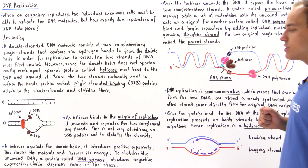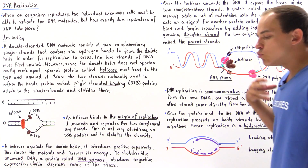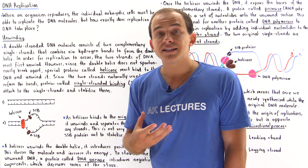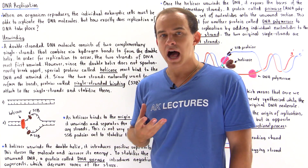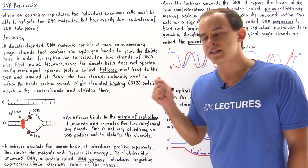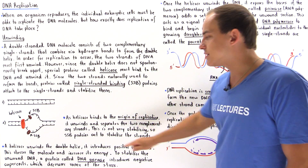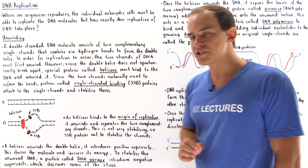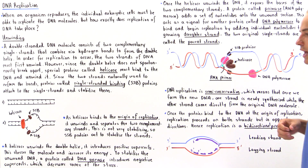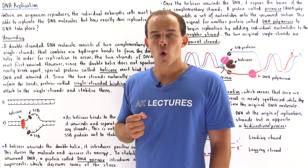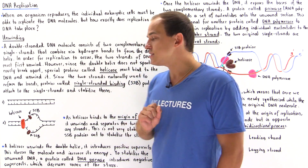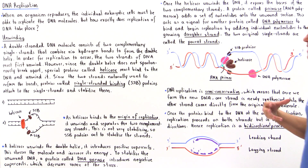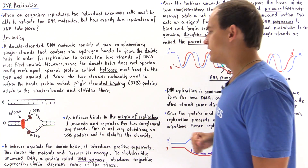As helicase unwinds our double helix, that unwinding process actually introduces positive supercoils. Positive supercoils basically destabilize our molecule by increasing its energy. So to stabilize the unwound DNA molecule, a protein known as DNA gyrase has to bind to our molecule and it introduces negative supercoils, which decreases the number of positive supercoils and therefore stabilizes the molecule by decreasing the amount of stress it experiences.